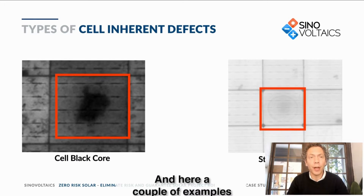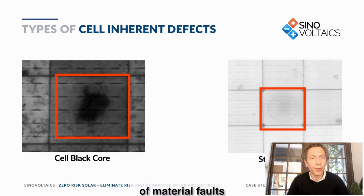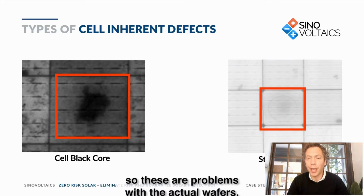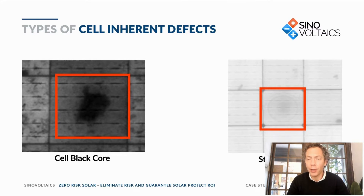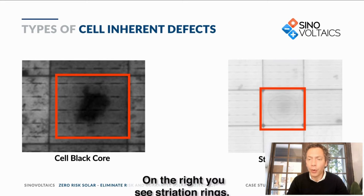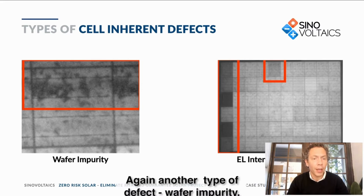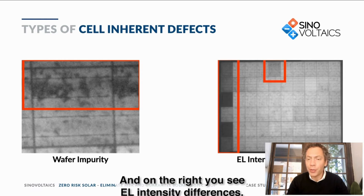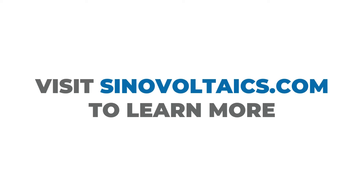Here are examples of material faults — problems with the actual wafers used. On the left, black core; on the right, striation rings — another type of wafer impurity defect. On the right you also see EL intensity differences. Visit synovoltaics.com to learn more.